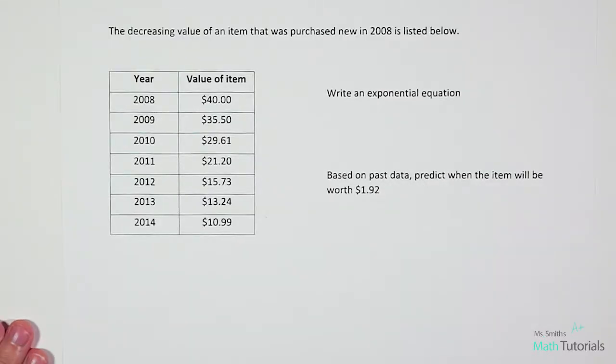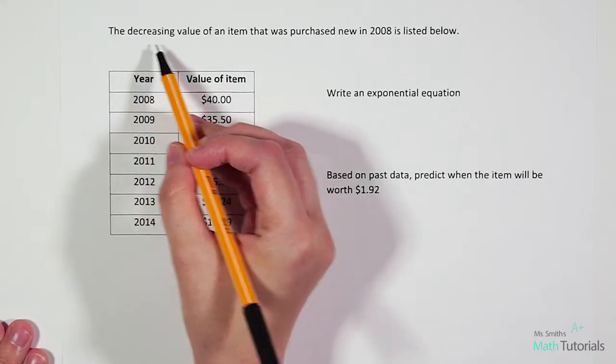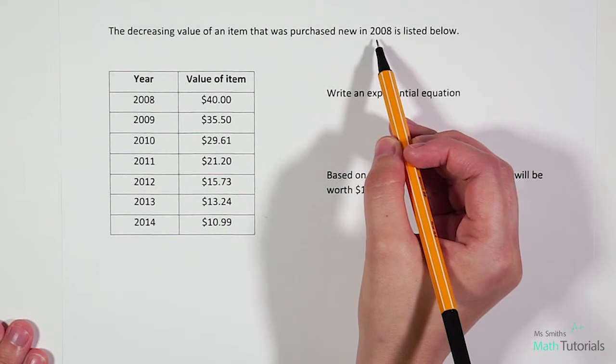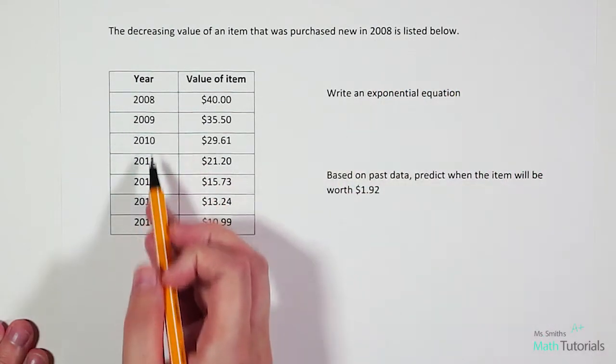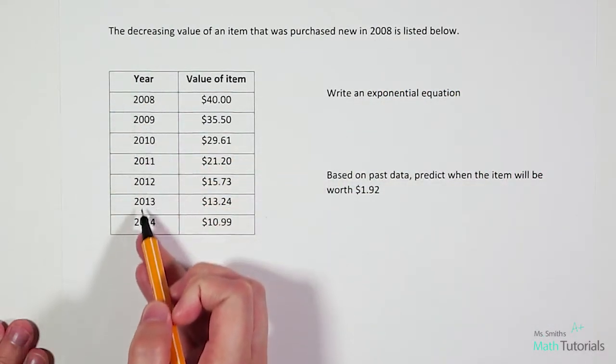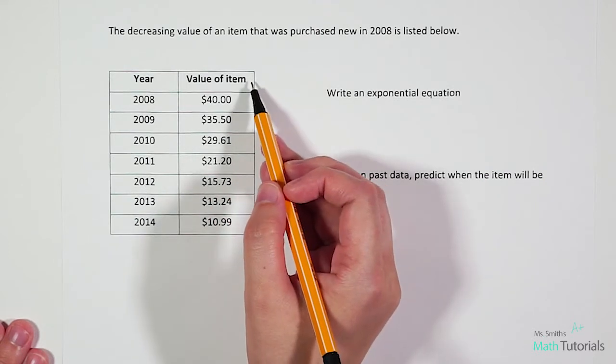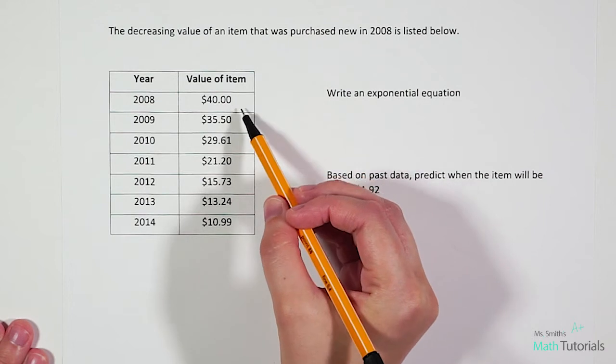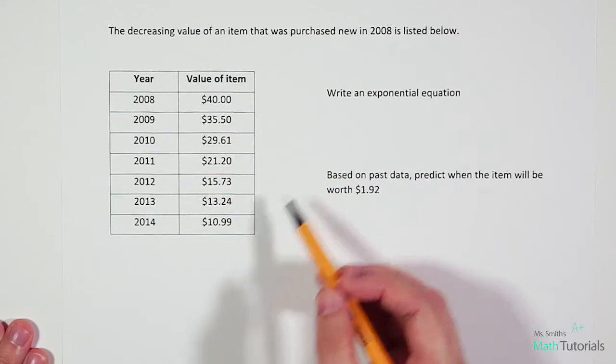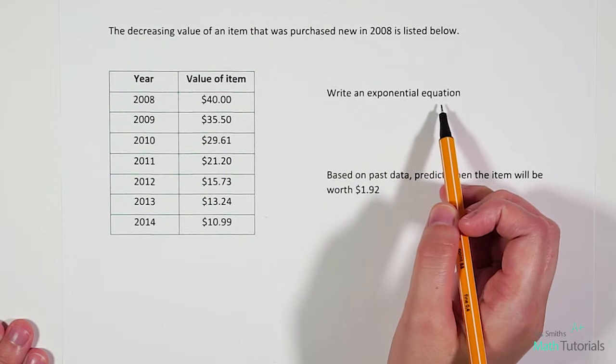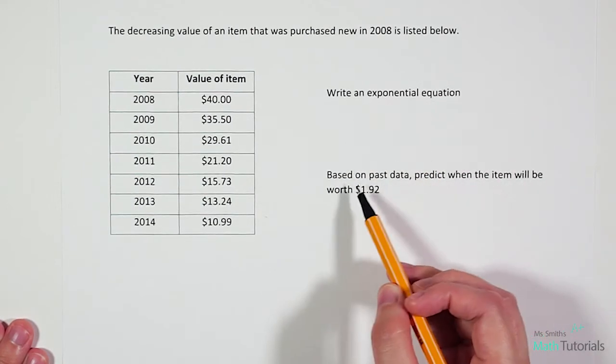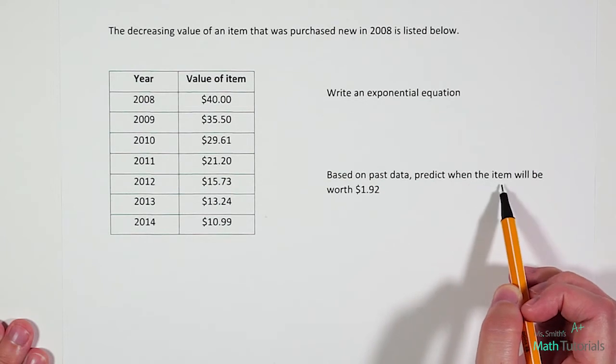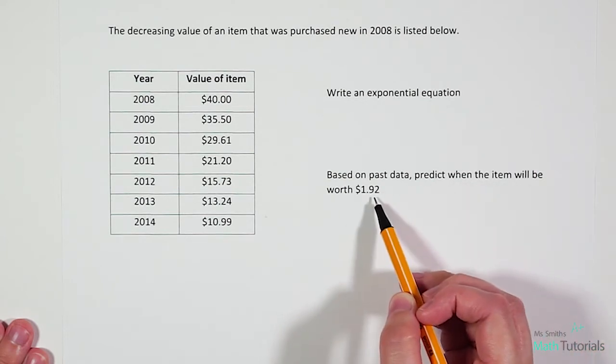Let's look at one more example together. This one says the decreasing value of an item that was purchased new in 2008 is listed below. So looking at our table, we've got our years as they go by and then the value of the item. And as it mentioned in the problem, the value is decreasing over time. We're asked to write an exponential equation and also based on our past data, predict when the item will be worth $1.92.